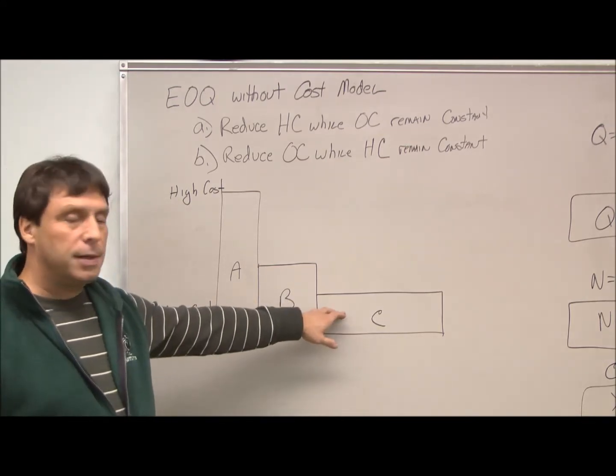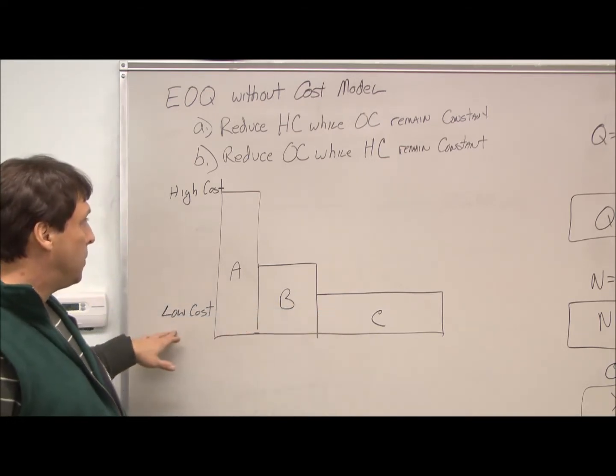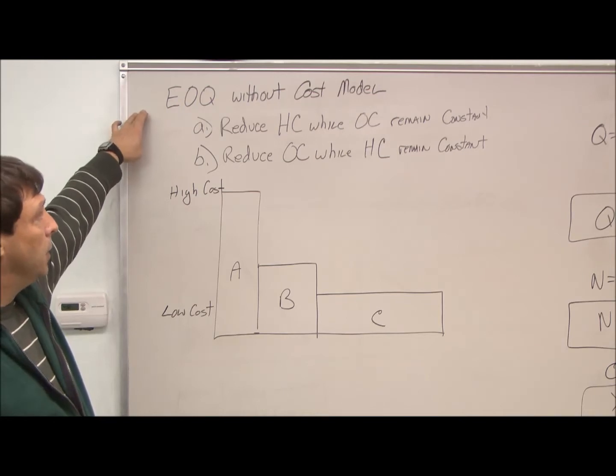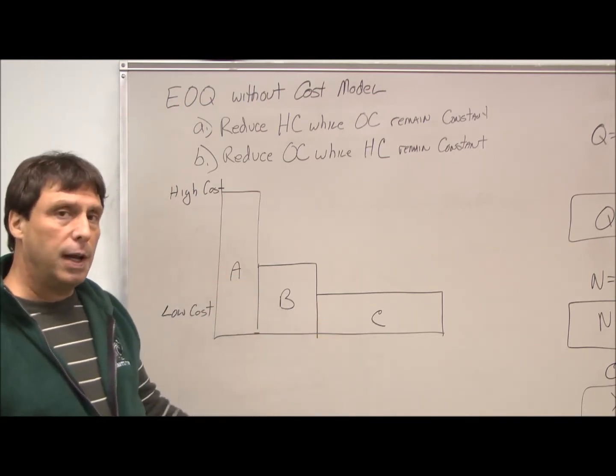It's almost to the point where it's not worth tracking individually. And that's what we're really looking with the without cost model is this C type of inventory is one way to handle the cost.